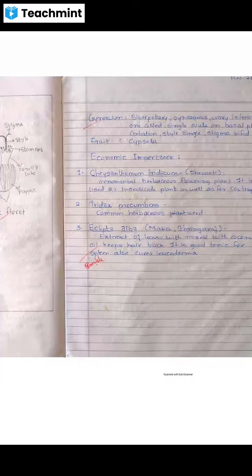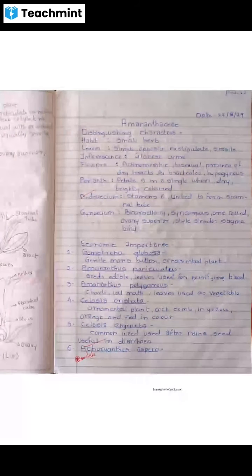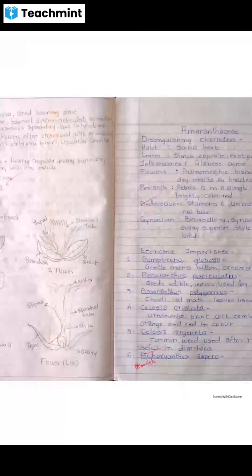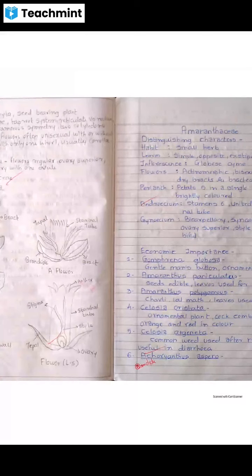Next is Amaranthaceae. Classification: Division Spermatophyta, Class Dicotyledonae. Subclass Apetalae — flowers often unisexual, with or without perianth, with only one whorl, corolla usually absent. Perianth means where sepals and petals are fused.